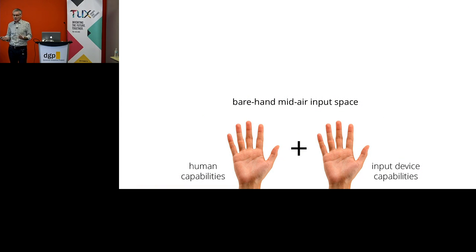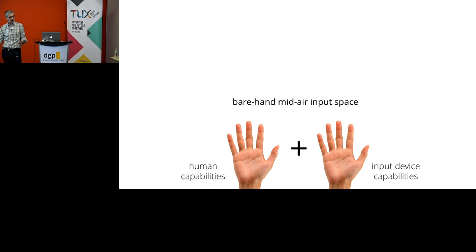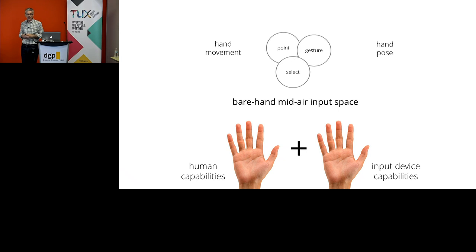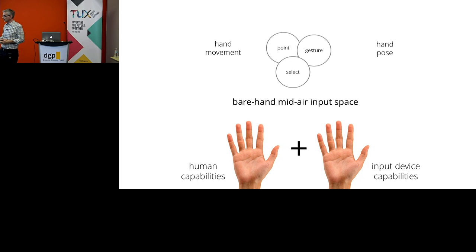Another input space is bare-hand mid-air input, which is becoming very hot with virtual reality and augmented reality. Using your hands — without any input device — you just point or gesture to control the computer. Hopefully this creates an input space with exact parity to human capabilities, though there are realistic problems around sensor limitations and Midas touch, so you have to limit the input space a little. At a high level, you can take hand movement and hand pose to do different kinds of point, gesture, and select actions.